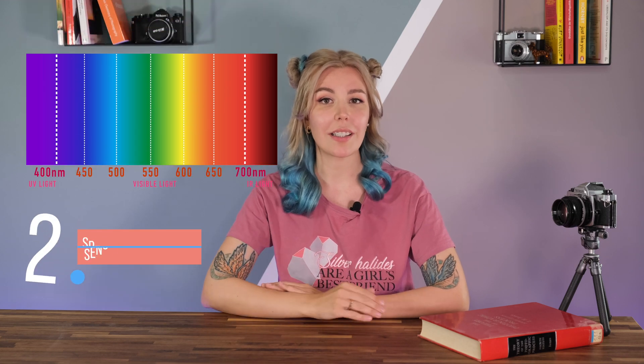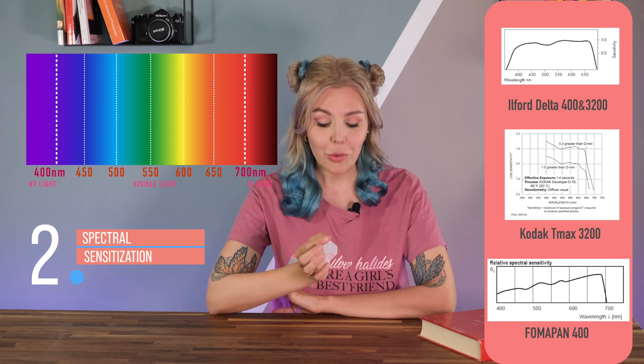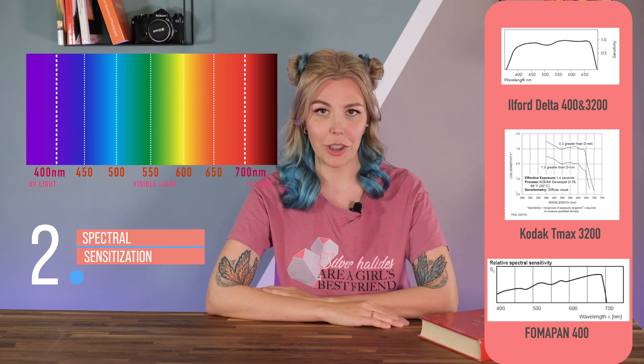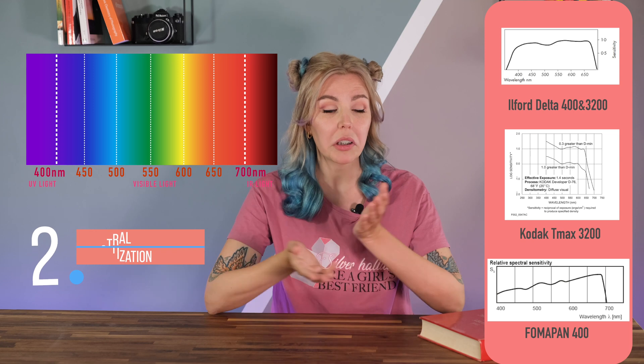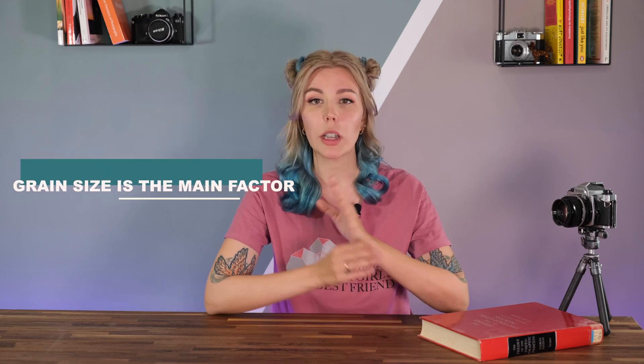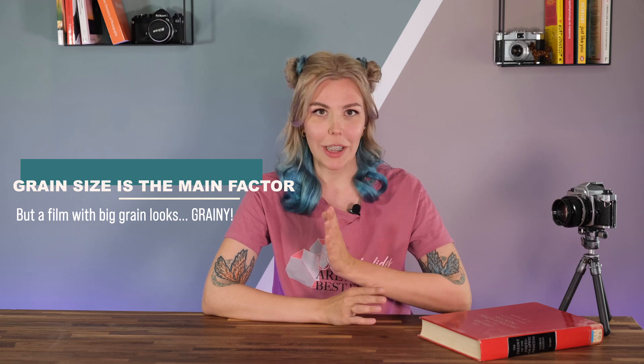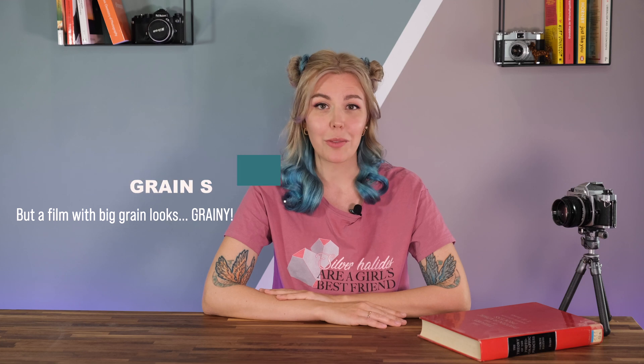Another factor is the spectral sensitization we already talked about. If the film can capture more colors, it also performs more efficiently — this is why most 400 plus ISO films are fully panchromatic, sensitive up to 700 nanometers. It can be a gain of a third of a stop. The third factor is the chemical treatment of the crystals during production to make them less stable. A very disturbed silver halide needs much less light to become developable. The downside is that a highly sensitive emulsion is more prone to fogging and has a shorter lifespan. Grain size is still the main factor, with everything else giving only up to one stop in sensitivity.